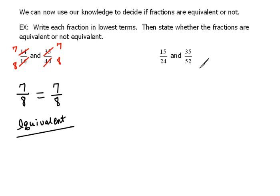Let's look at another example. Here we have 15 over 24 and 35 over 52. Well, looking at 15 and 24, 2 won't go into both of them. 3 will. 3 will go into 15 five times, and 3 will go into 24 eight times. So, we can reduce that fraction to 5 over 8.